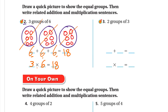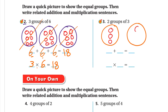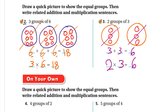Number three: two groups of three. We draw two groups, each with three — one, two, three; one, two, three. For addition: three plus three equals six. To write it as a multiplication sentence: two groups, each group has three, so two times three equals six. Hope you guys understand this lesson — have a nice day and goodbye!